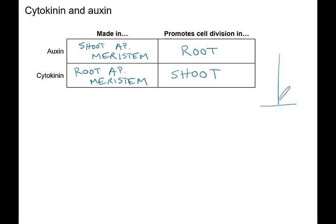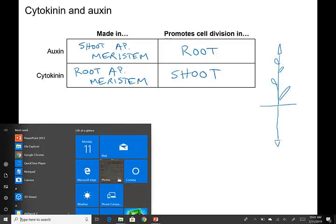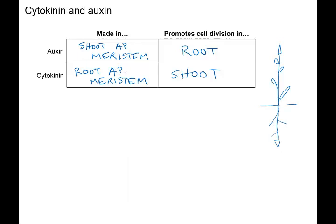So let's think about why this makes sense here. Here's a plant. There's the above ground part with the shoot apical meristem, and then here's the below ground part with the root apical meristem.